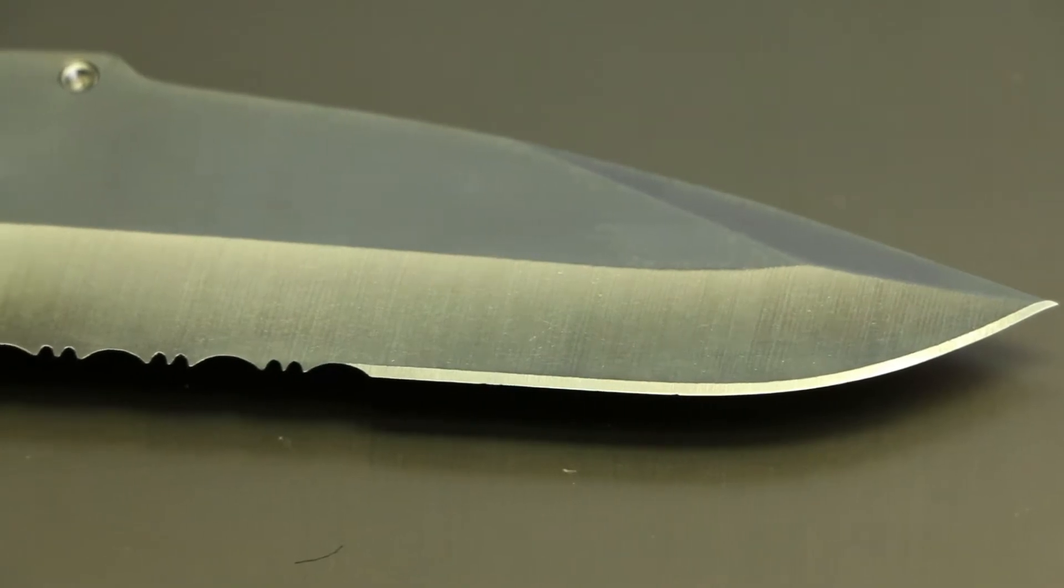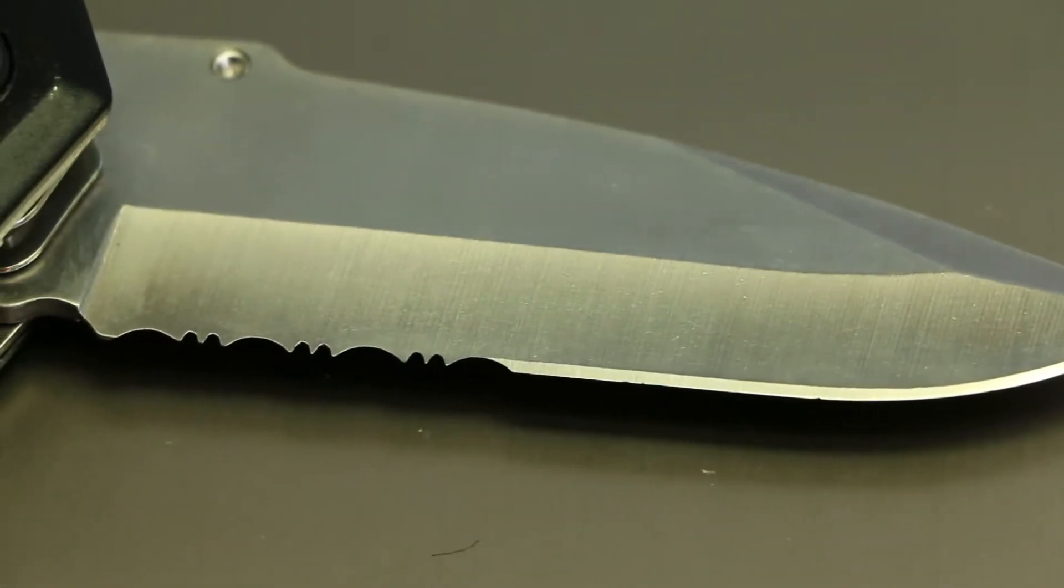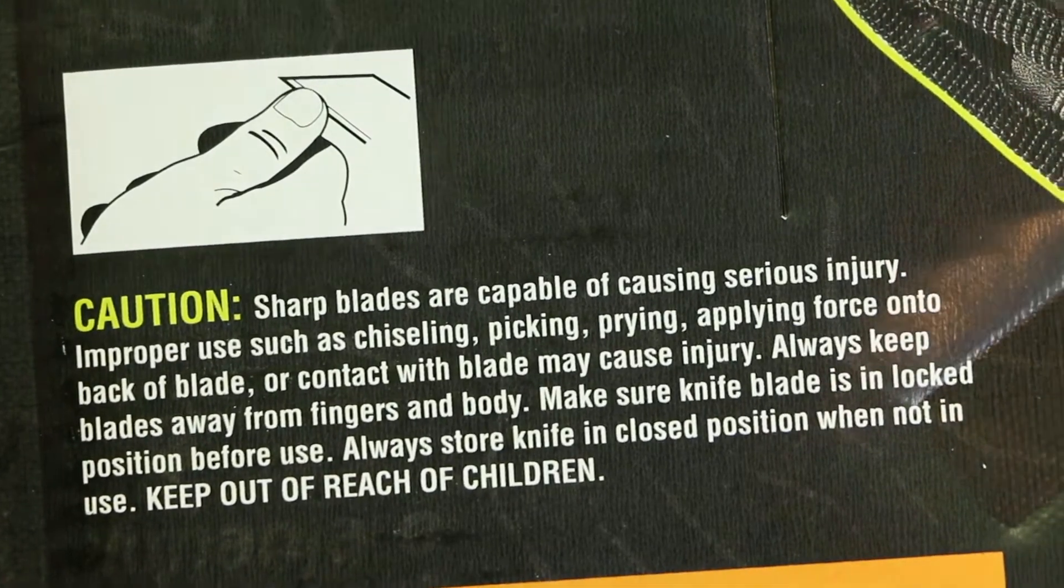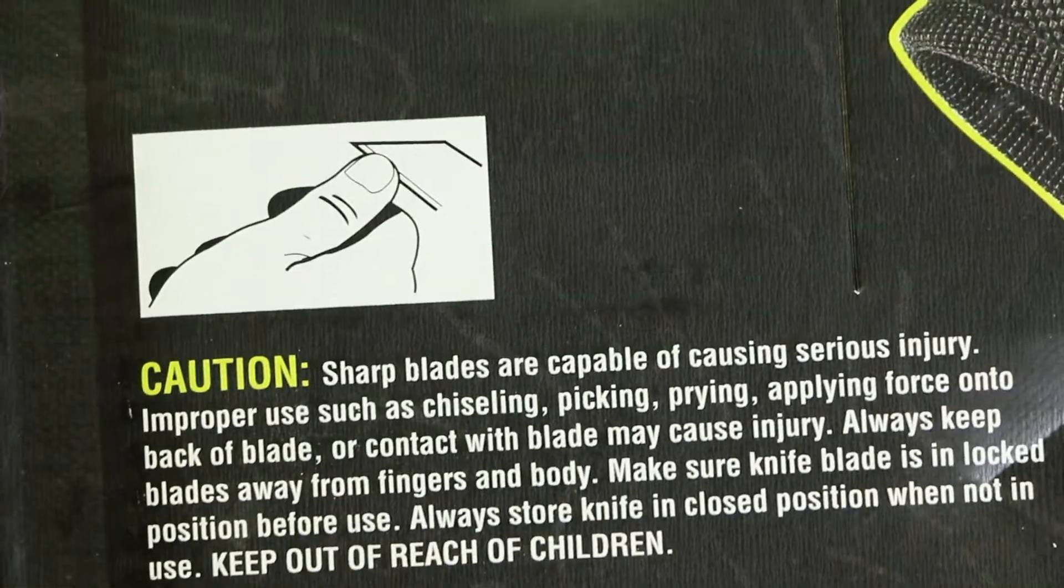And for some weird reason, on the back here, it's like, hey, sharp blades are capable of causing serious injury. And it shows this person just putting his thumb directly against the blade. That's probably not a good idea.